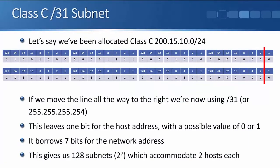Moving on, let's say we've been allocated Class C 200.15.10.0/24, the same as the last example. Here we're going to move the line all the way to the right - we're going to go with a /31. We can't do a /32 if we want more than one available host. A /32 subnet mask has only one host, mostly used for loopback addresses. So if you need multiple hosts, the furthest right you can go is /31. Written in dotted decimal notation that would be 255.255.255.254 - we get 254 because it's 128+64+32+16+8+4+2.